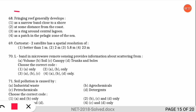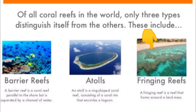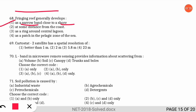The first question is: a fringing reef generally develops what kind of ring around the shore or coastal region? The correct option is option one — the characteristic of fringing reefs is a narrow band close to the shore. There are three kinds of reefs: barrier reefs are separated by a channel of water and are parallel to the shore; atolls are ring-shaped coral reefs consisting of a coral rim that encircles a lagoon; and fringing reefs form around a landmass close to the shore.